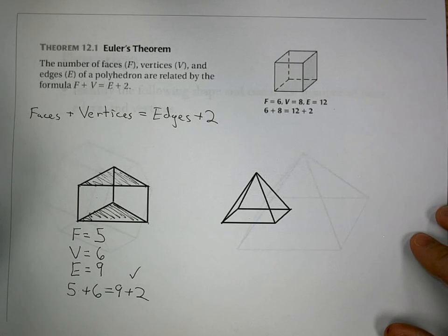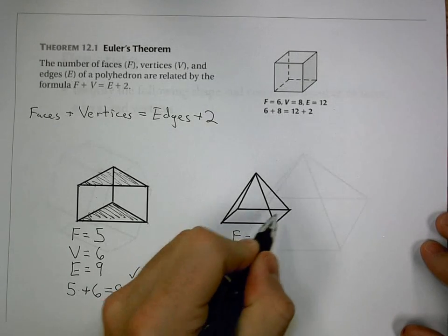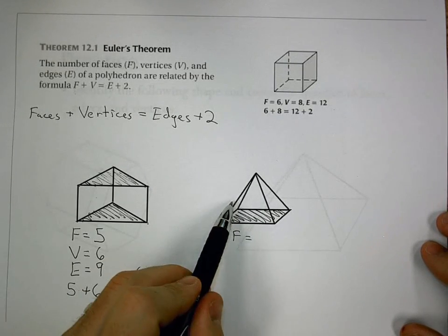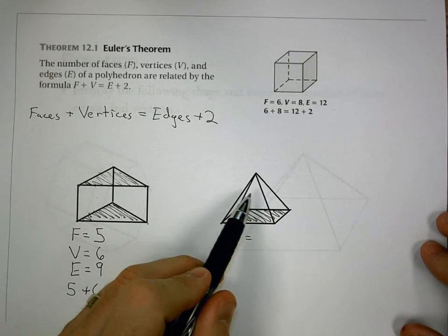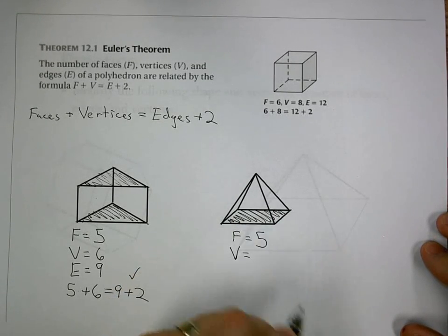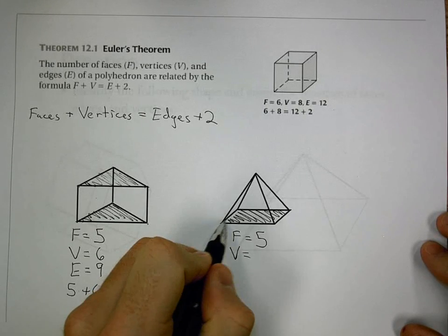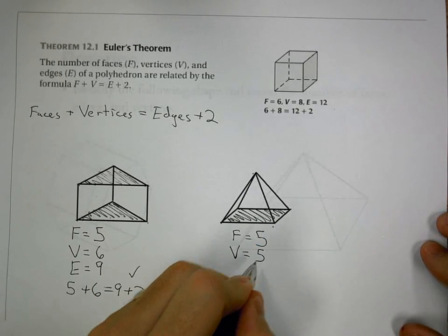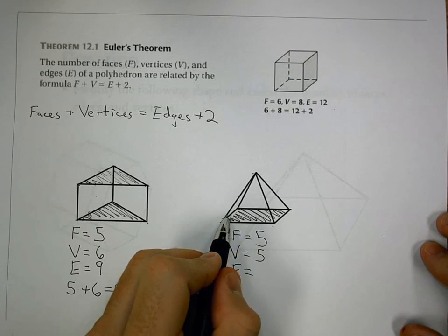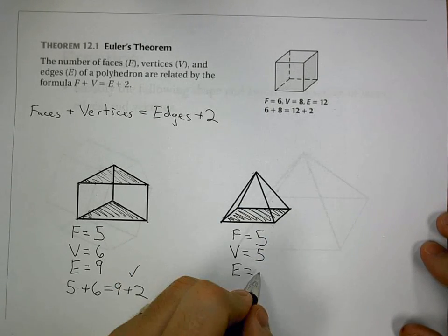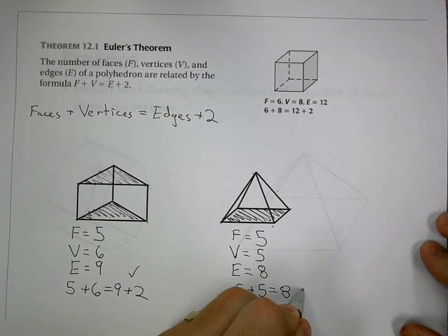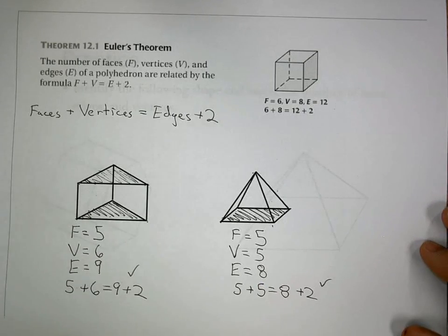Next, I have a rectangular pyramid. If I look at the number of faces, well, I have my base. That's a rectangle. And then, I have the four sides of the pyramid going up to the point. So, that would give me five total. Vertices is corners. One, two, three, four, five. Edges, number of lines. I have four that give me the rectangle, and then four that go to the point. It gives me eight. Five plus five equals eight plus two. That one checks out.